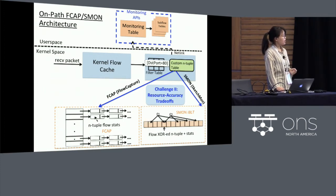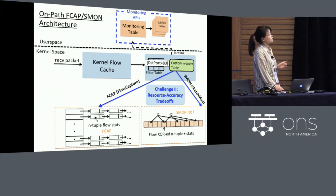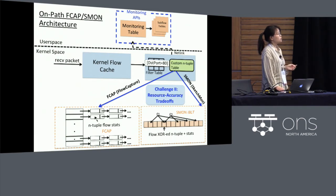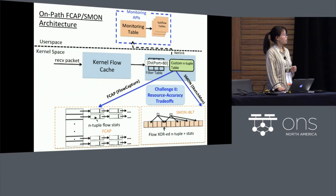Which is a space-efficient probabilistic data structure and is different in order to save our memory space. Compared to FCAP, in SMON, we need the user space thread to decode those flows that are encoded in the Bloom Filter lookup table, so those flow stats can be aggregated into the monitor table and the subflow tables in the user space.